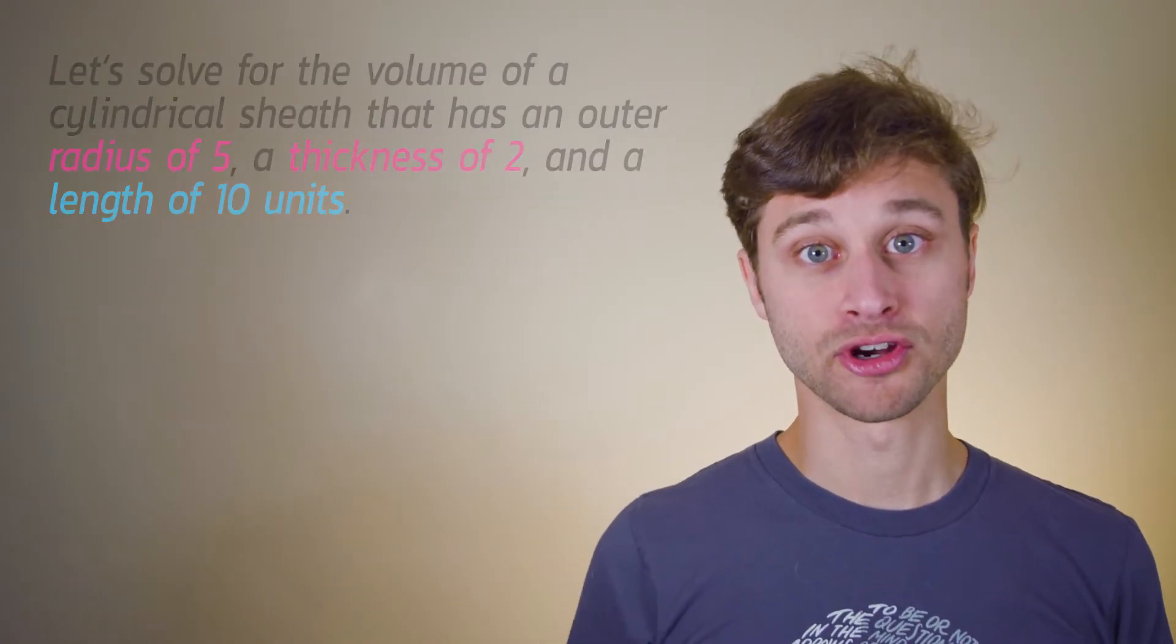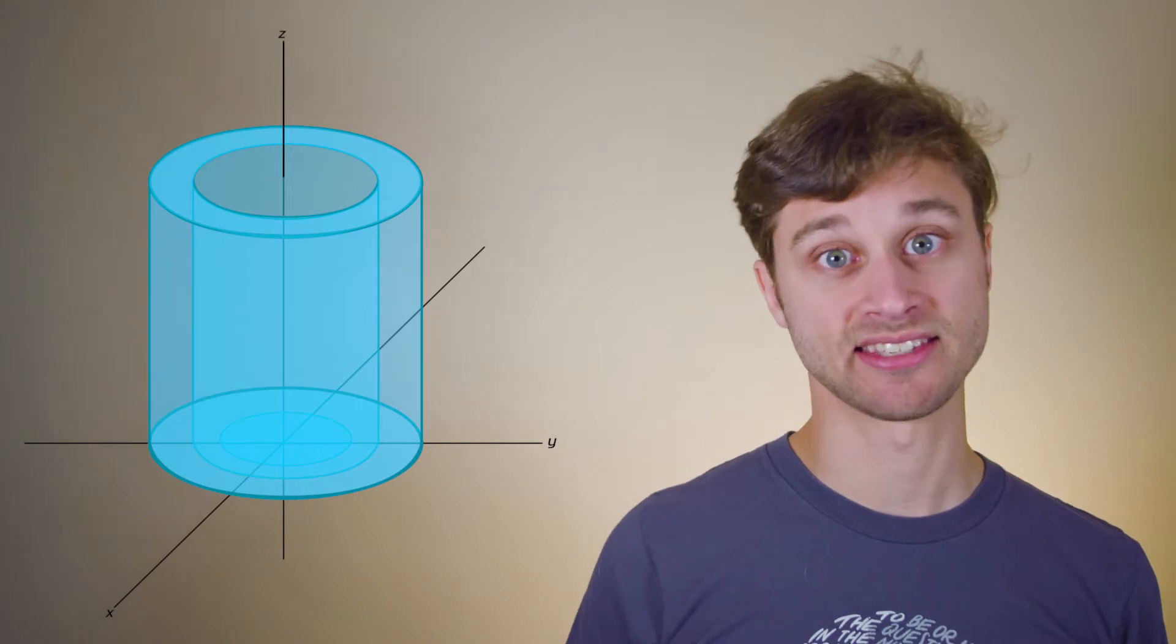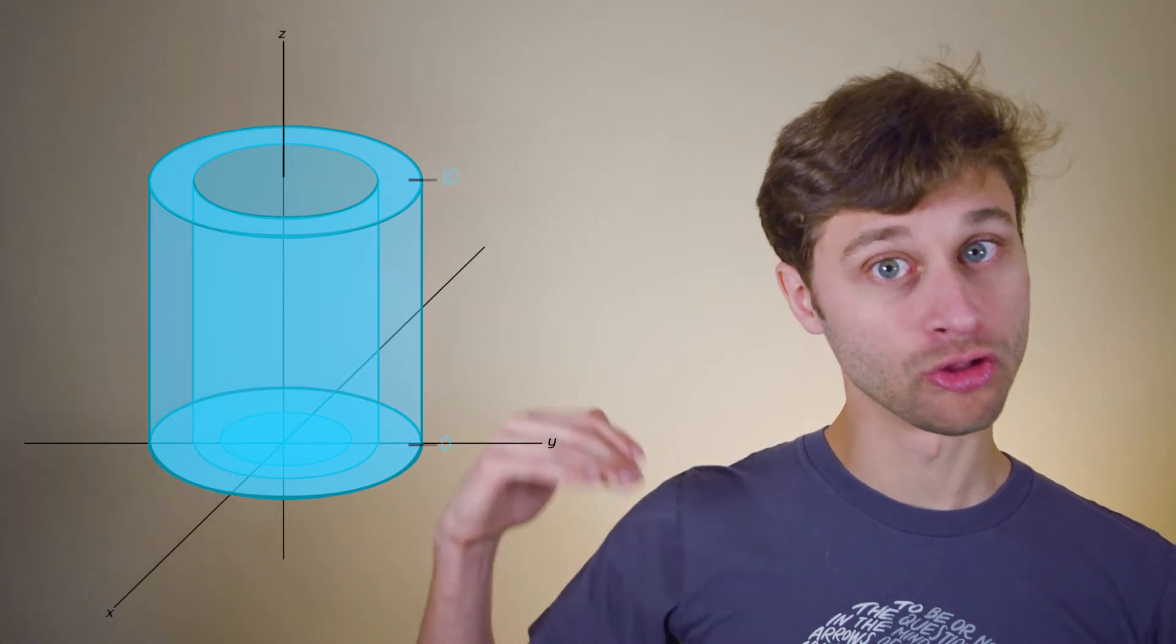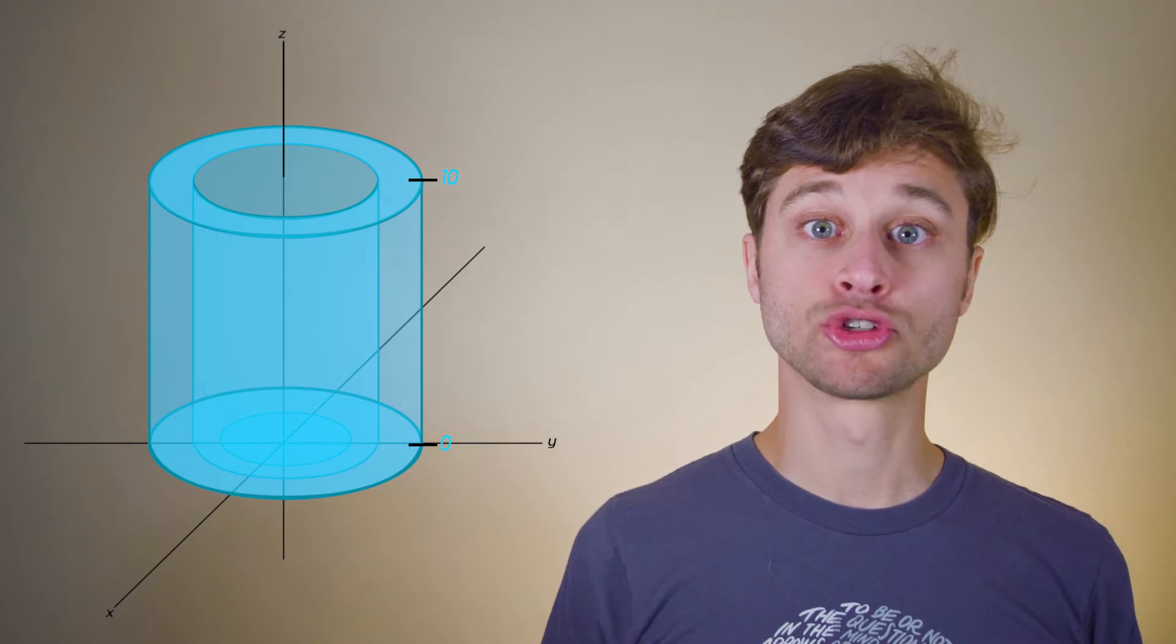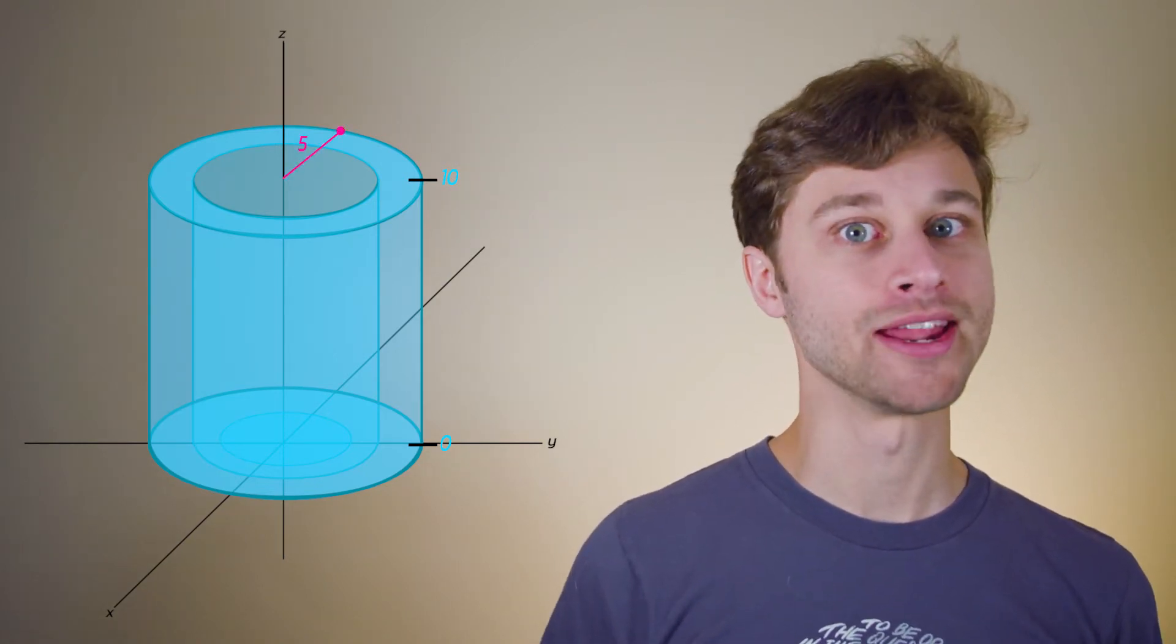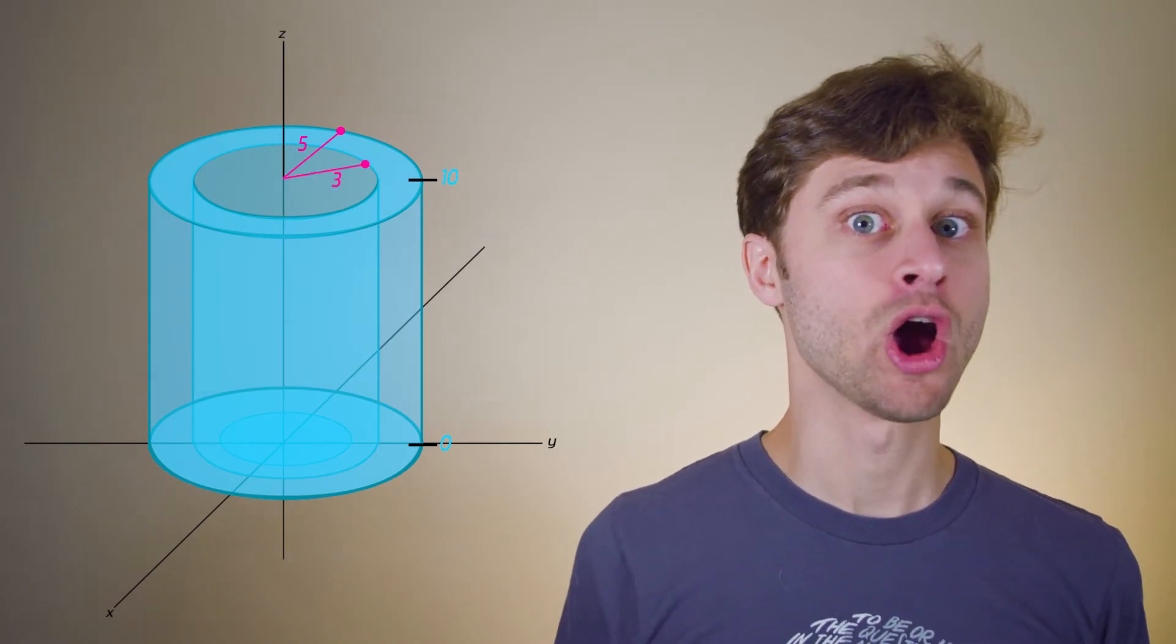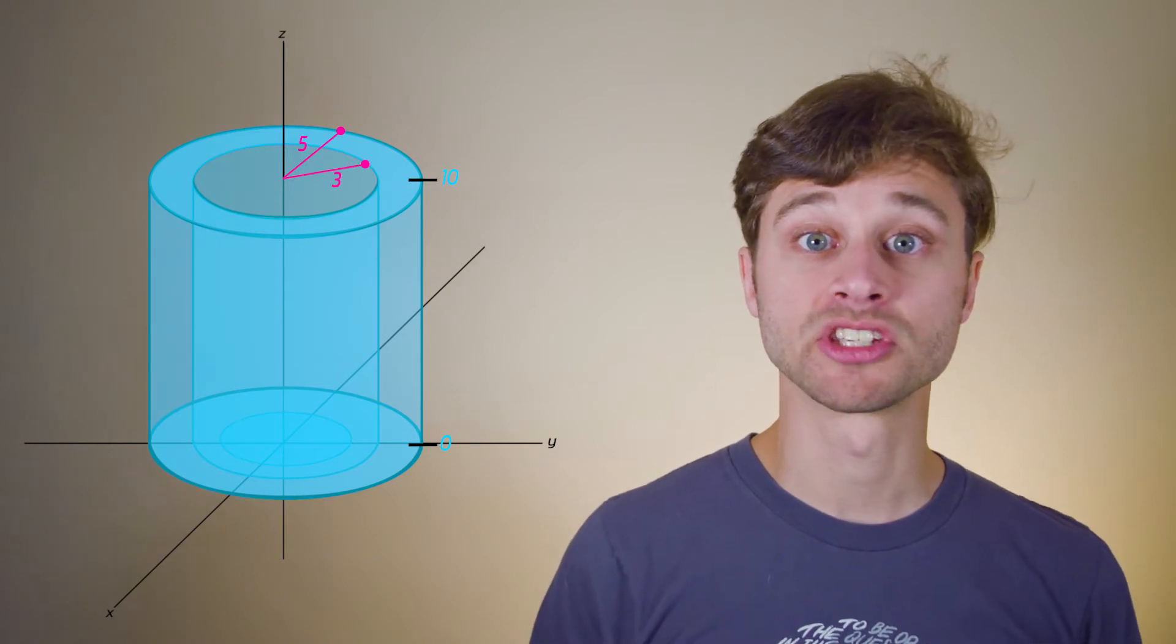So let's draw out the situation first. I have a cylinder of length 10, which I'm going to draw along the z-axis here, from z is equal to 0, all the way to z is equal to 10. The walls of the cylinder are 2 units thick, and have an outer radius of 5, which means that the inner radius is 3. Let's draw that here as two concentric rings around the z-axis.